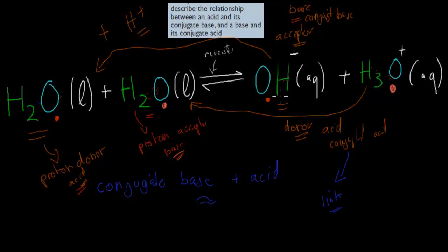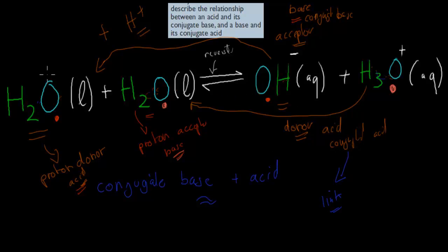This water molecule is linked to this hydroxide group, and this water molecule is linked to this hydronium group. In one case it will act as the acid, and then the same one will act as an acceptor in the reverse reaction. And for the other water molecule, it acts as a proton acceptor in the forward reaction, and then as a donor in the reverse reaction. That's the idea of conjugate bases and acids. The dot point itself says: describe the relationship between an acid and its conjugate base, and a base and its conjugate acid.